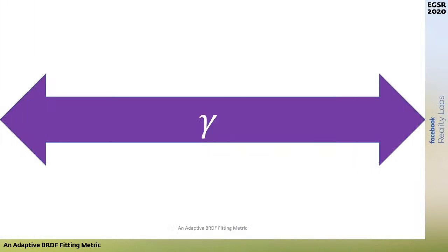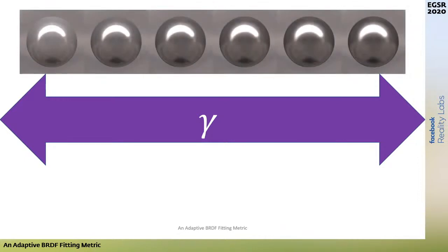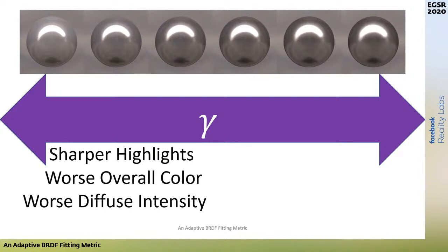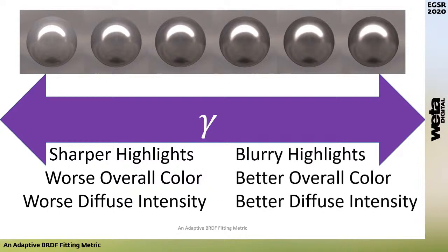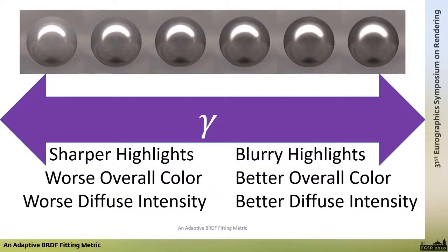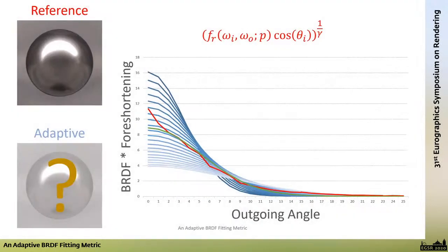Here is a selection of fits for nickel across various gammas — lower gammas to the left, higher to the right. Lowering gamma tends to sharpen the specular highlights, while overall color and diffuse intensity become less accurate. Raising gamma tends to blur the specular highlight but makes the overall color and intensity of pixels away from bright specular highlights more and more accurate. Given this range, which do we choose and how?